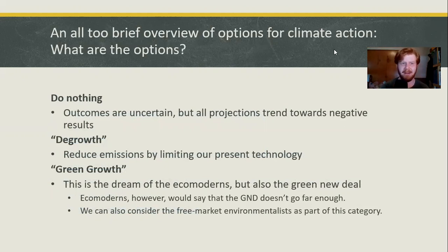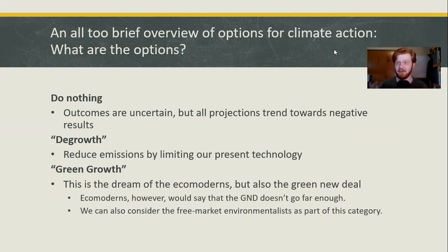The first option, which is really our present course, is to do nothing. What happens if we do nothing on climate change? Outcomes are uncertain, but all projections trend toward negative results — whether it's rising sea levels or fighting each other over canned goods in about 60 years. The do-nothing approach doesn't really work.